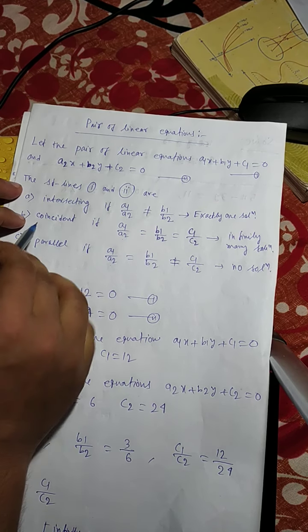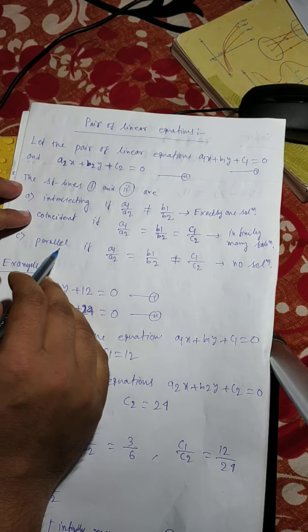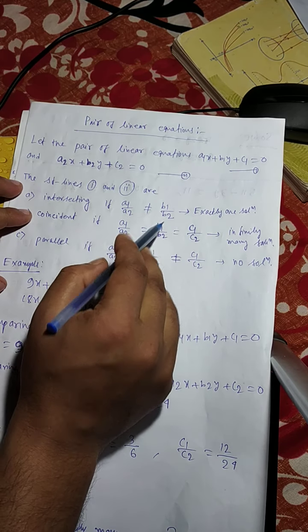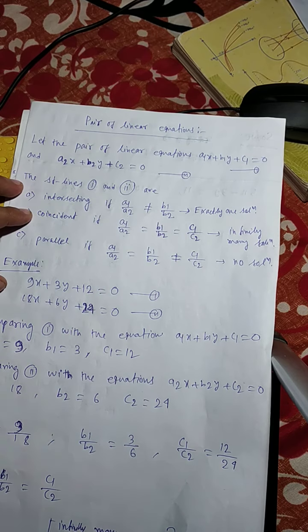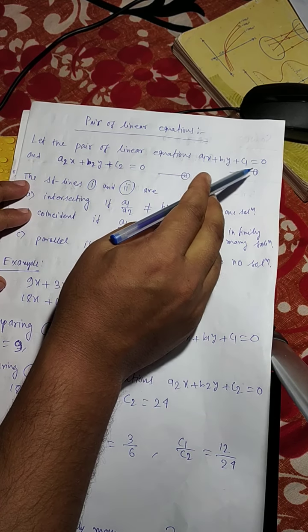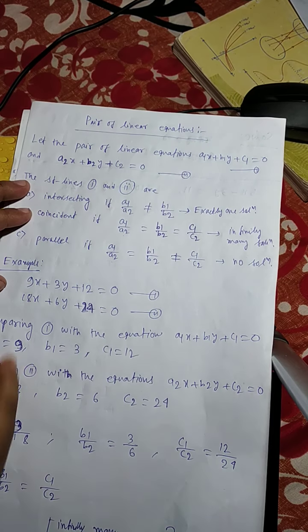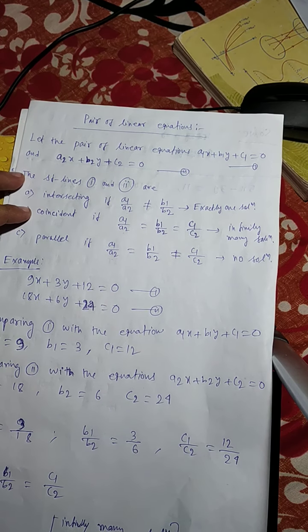Now case B: lines are coincident if a1 by a2 equals to b1 by b2 equals to c1 by c2. Or equations 1 and 2 have infinitely many solutions.